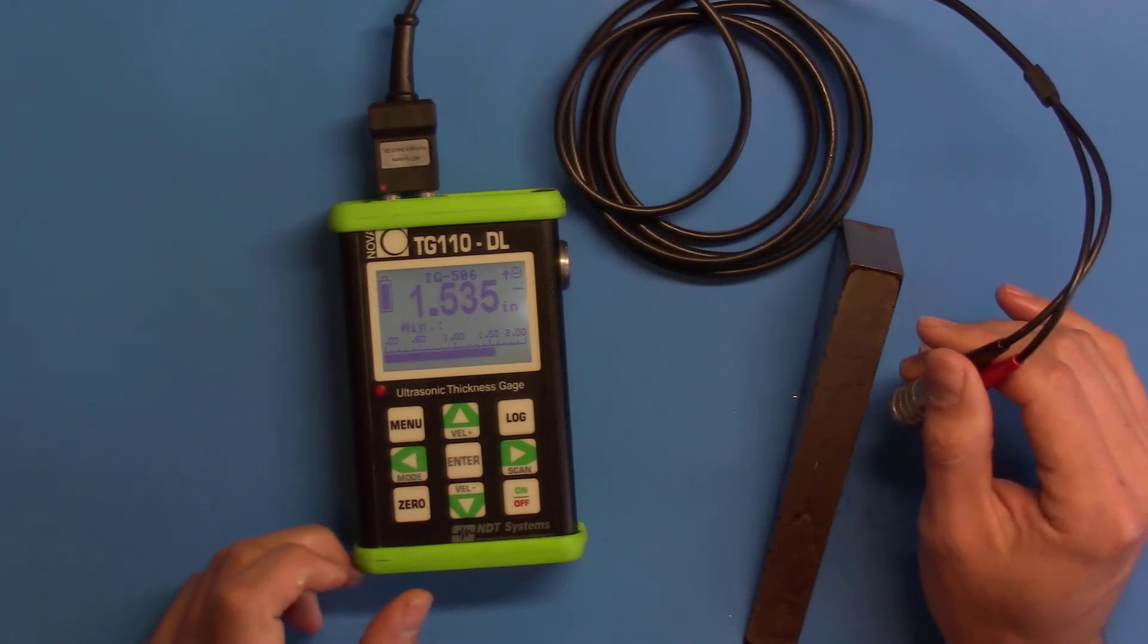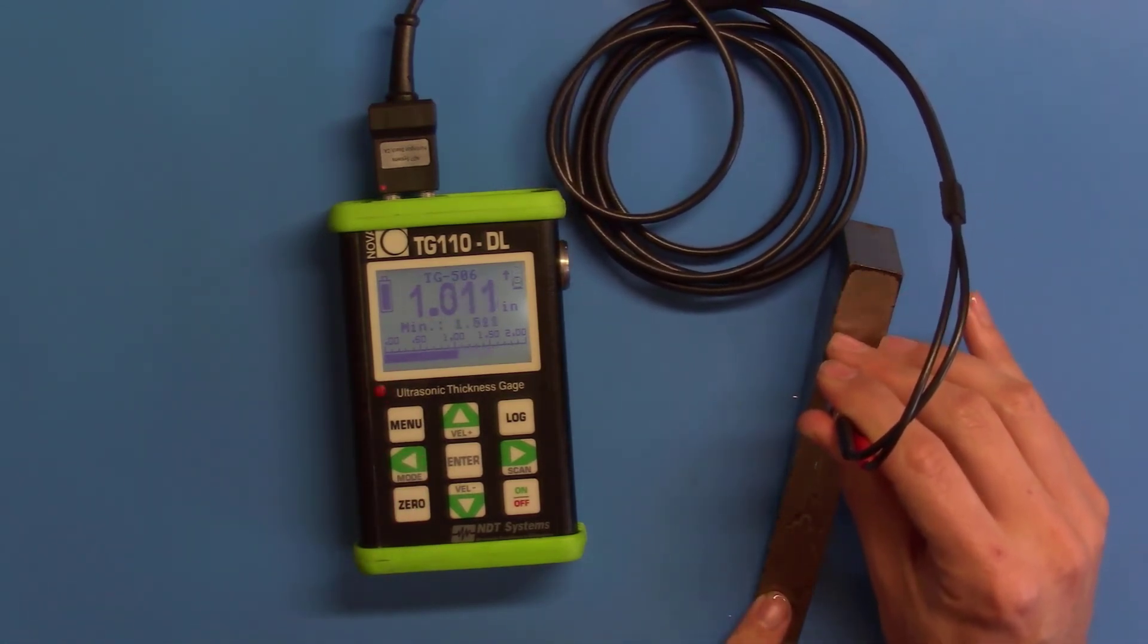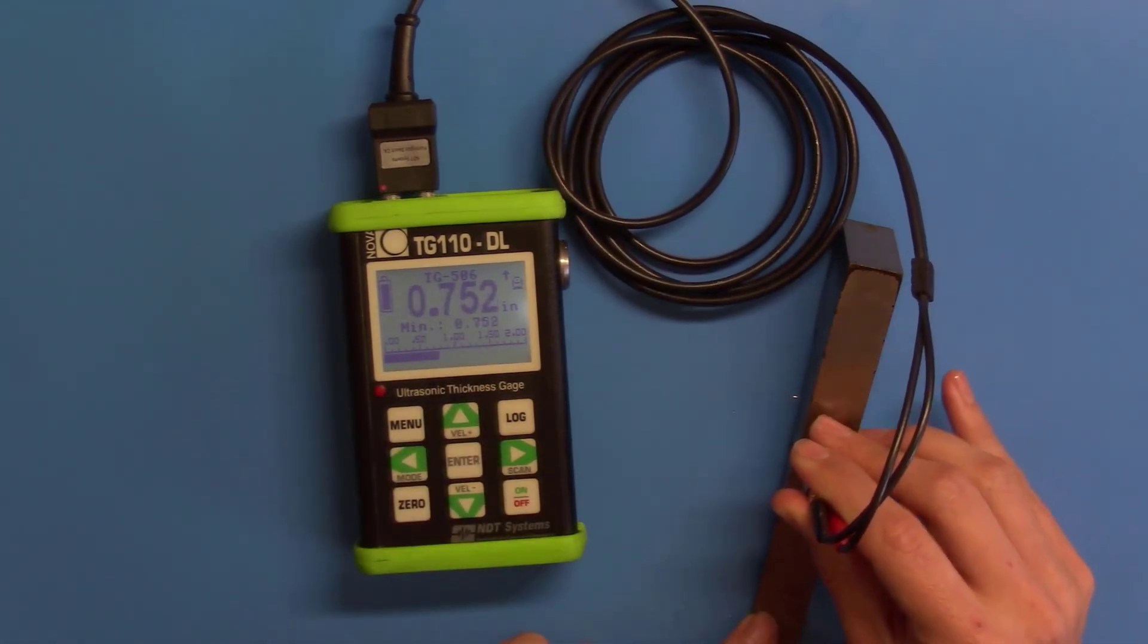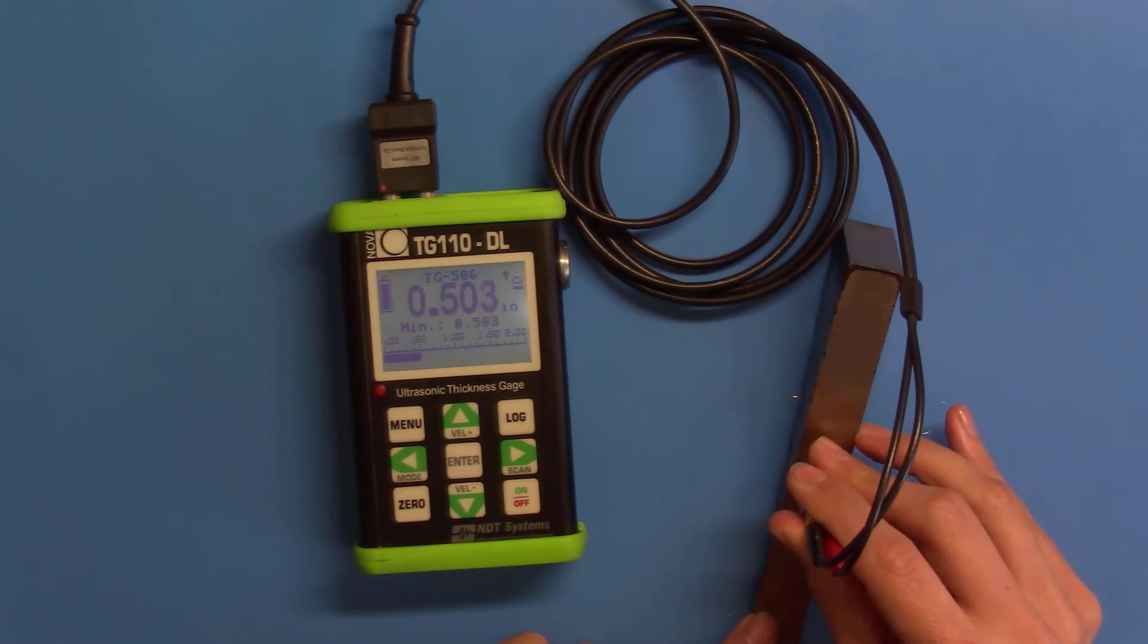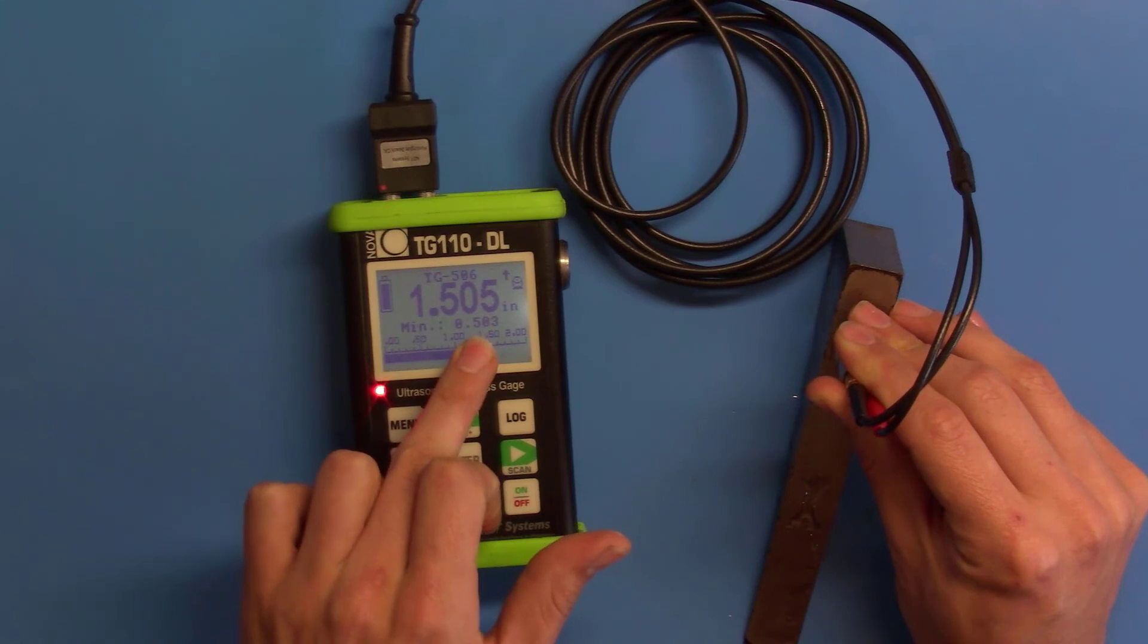The other mode is min-hold. It allows you to scan across a part, and the thinnest section recorded during that session is held. If I go back to a higher thickness, my minimum value stays.